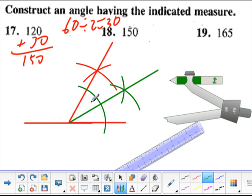But wait, there's more. Number 19 asked us to make a 165 degree angle. Well, how can I make 165? Let's do a little basic addition. How about 150, which I just created, plus 15.